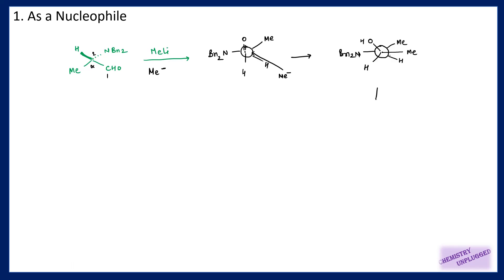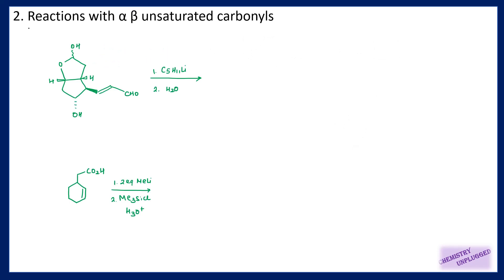We know that our nucleophile will approach from anti to the N-desile group, so it will approach from this less hindered side. This is our product, and we can write it down in linear form. These two groups which are anti to each other will be written like this, and these two groups which are on the above side will be above the plane and the lower side group will go below the plane.